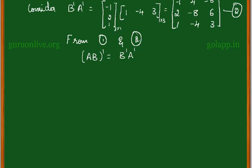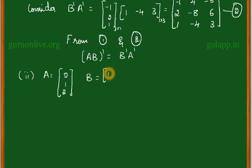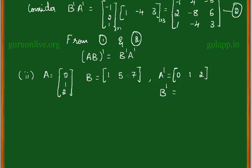Now consider the second sub-question: A is equal to the matrix [0, 1, 2] and B is equal to [1, 5, 7]. From this we can find A transpose and B transpose. A transpose is obtained by interchanging the column into a row: [0, 1, 2]. B transpose is obtained from a row matrix becoming a column matrix: [1, 5, 7].